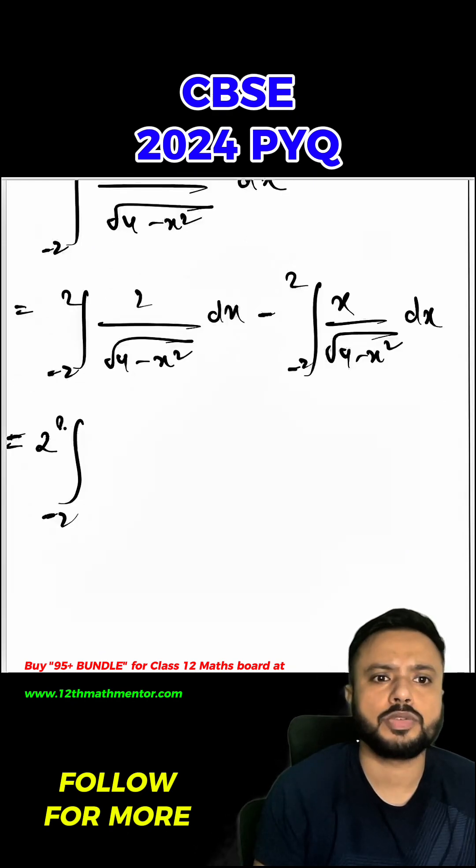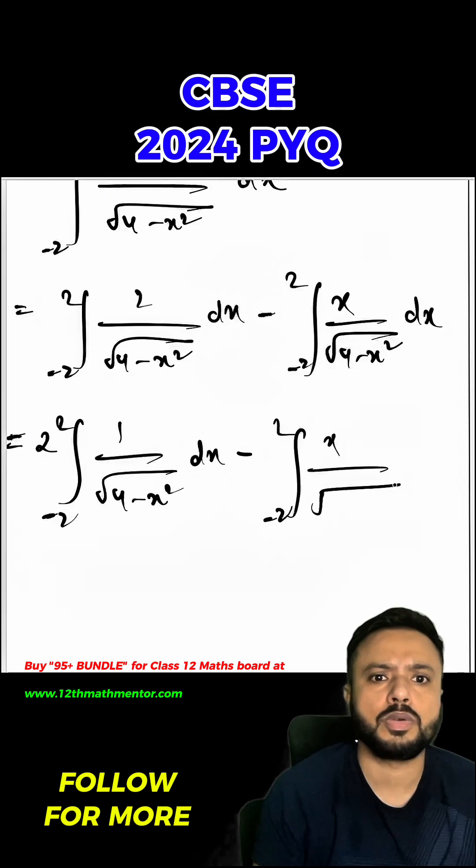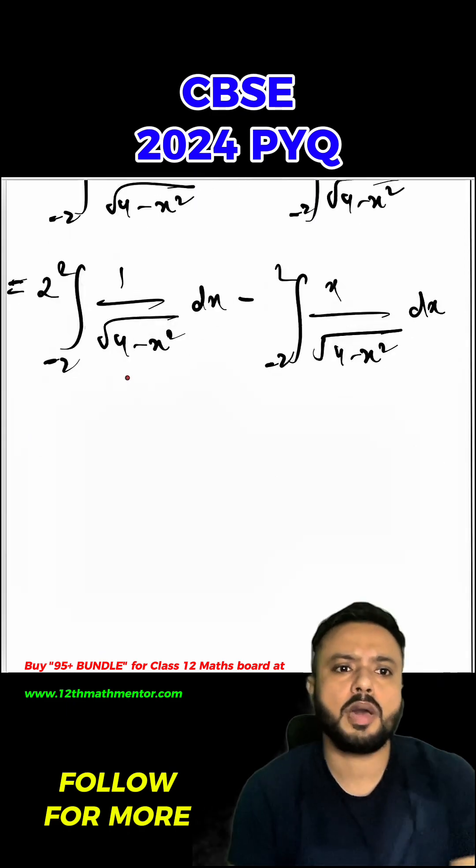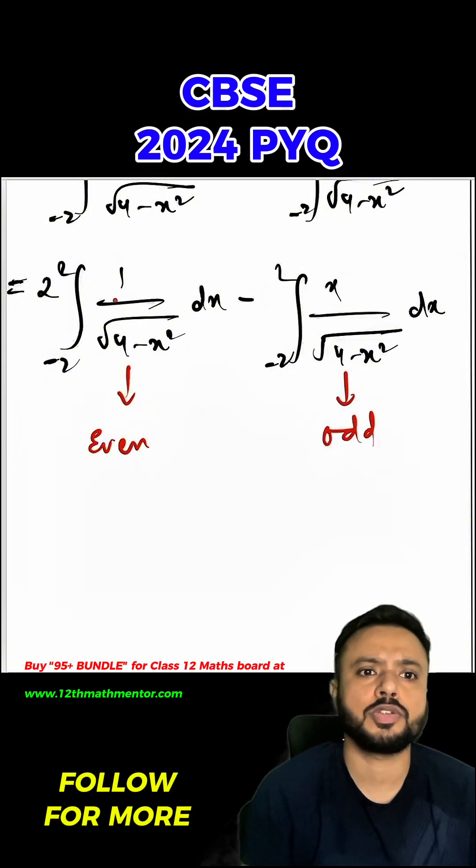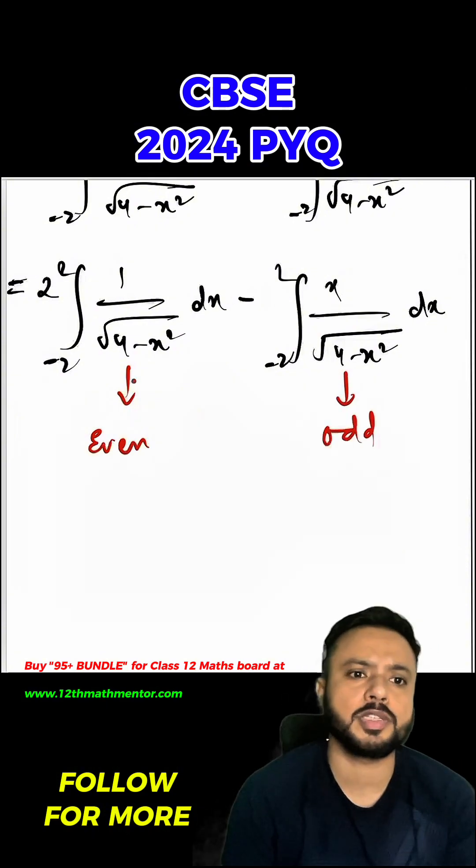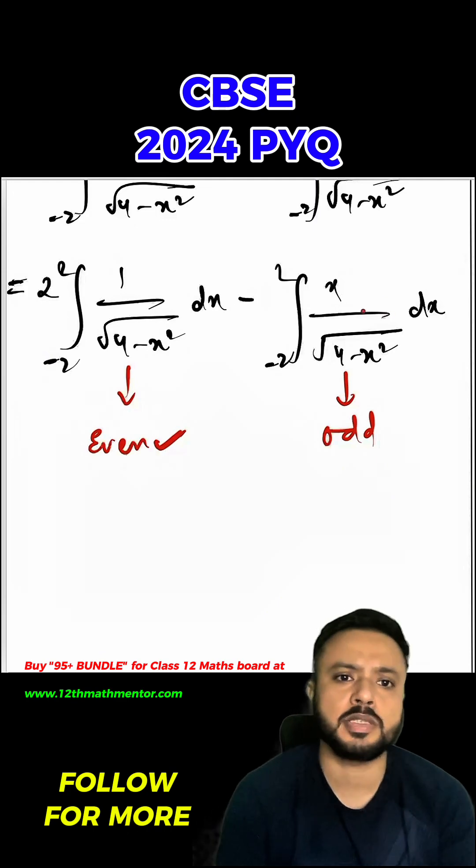Which will be minus 2 to 2, 1 upon root of 4 minus x square dx, minus 2 to 2, x upon root of 4 minus x square dx. Now here, this integral is basically an even function, and this integral is basically an odd function, because when we replace x with -x in f(x), the first is an even function and the second is an odd function.